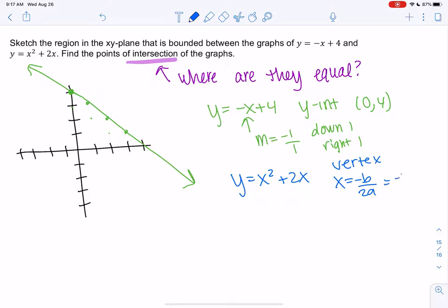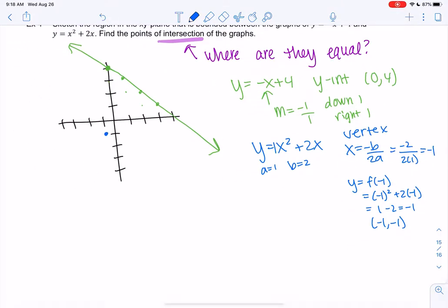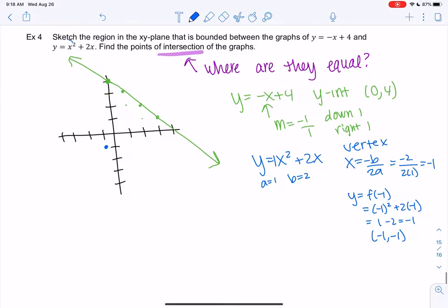So x equals negative b over 2a is my vertex. So b is 2, so negative 2, and a is 1, right there, over 2 times 1. So the vertex would be at negative 1. And then we find the y-value. So negative 1 squared plus 2 times negative 1, just plugging in. What's that? 1 minus 2, negative 1. So my vertex is negative 1, negative 1. That's probably not enough to graph it. I know that it opens up because it's positive.